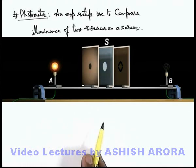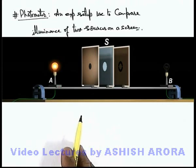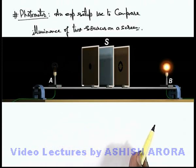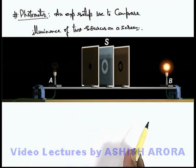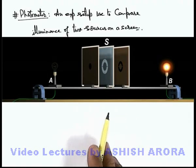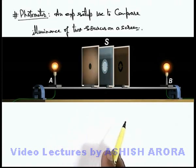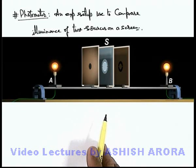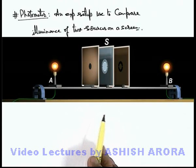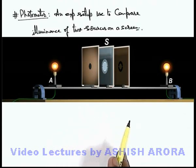When source A is switched on, a circular patch is obtained on the screen due to light passing through the circular cut. If it is switched off and the other source is switched on, light passing through the annular region produces a ring-shaped patch on the screen. If both sources are switched on, both patches are illuminated simultaneously, and you can see the illuminance of the 2 patches are different because of the difference in illumination of the 2 sources on screen.